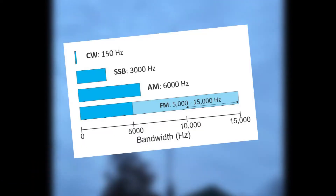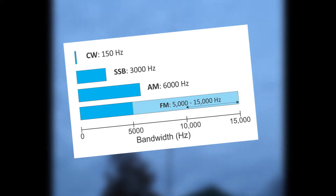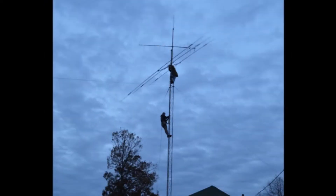Continuous wave, or Morse code, takes even less bandwidth than SSB — about 150Hz versus 3kHz. Frequency modulation takes more bandwidth than AM, running a hefty average of about 5kHz to 15kHz versus AM's meagre 6kHz.